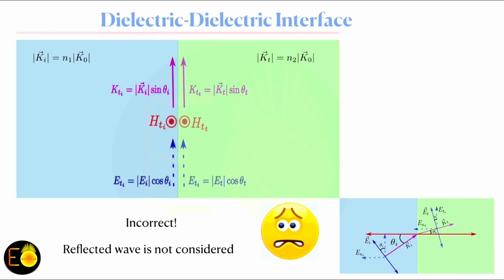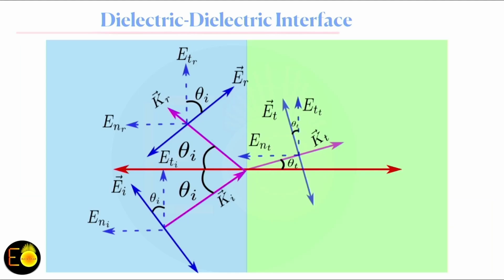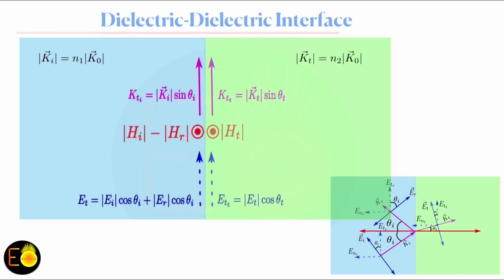The reflected wave makes the same angle with the surface normal. It also has two electric field components. The total tangential component of the electric field in medium one — the sum of incident and reflected tangential components (with the same theta_i) — must equal the total tangential component in medium two.